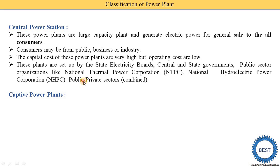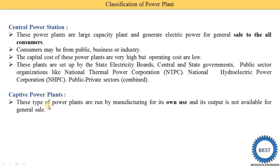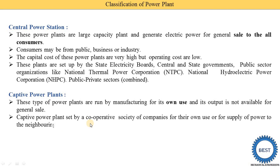Now, what is the captive power plant? These types of power plants are run by a manufacturing company for its own use, and their output is not available for general sale. For example, if an industry installs its own power plant and the electricity produced is used only by that industry, then it is called a captive power plant.